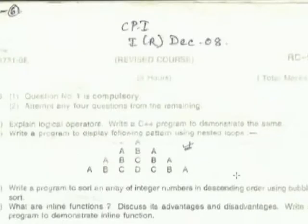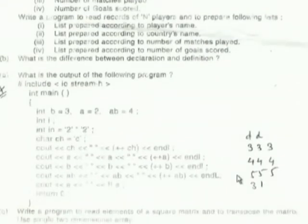I have a few sample university question papers with me. The first question is the compulsory question, and then out of the remaining six questions, students have to attempt any four. Questions like 'what would be the output of the following program' are also asked. We cannot skip even the smallest part of the syllabus — for example, questions on increment/decrement operators and what the output would be, or on logical operators like left shift and right shift, requiring students to know binary representation for the shifting as well. This makes it difficult for faculty to cover that much detail for all topics.